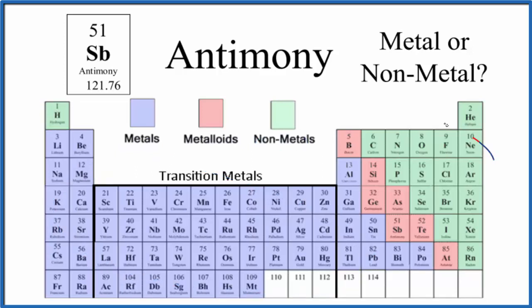Then on the right-hand side, we have our nonmetals. Then in between, we have what are called the metalloids. They have properties of both metals and nonmetals.